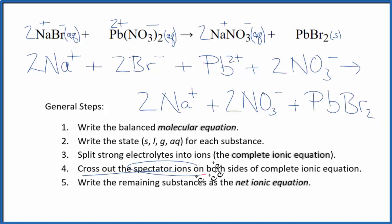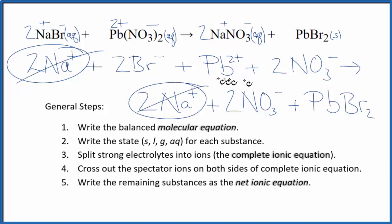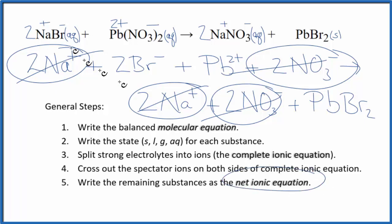Now we can cross out the spectator ions. They're on both sides of the complete ionic equation. When I look at the reactants and the products, I see I have two sodium ions here in the reactants and two in the products. Get rid of those. Two nitrate ions, two nitrate ions. Cross those out. What's left is the net ionic equation for NaBr plus Pb(NO3)2.